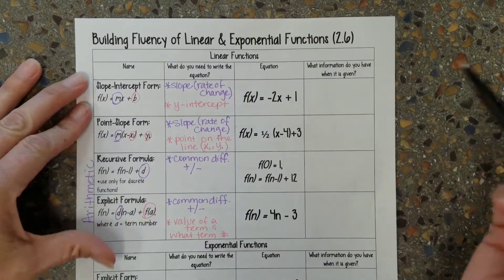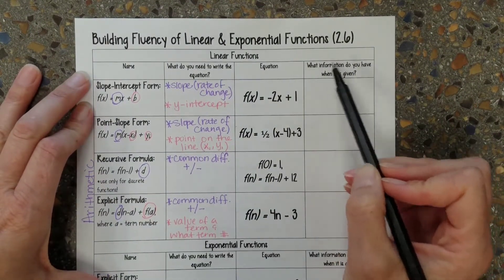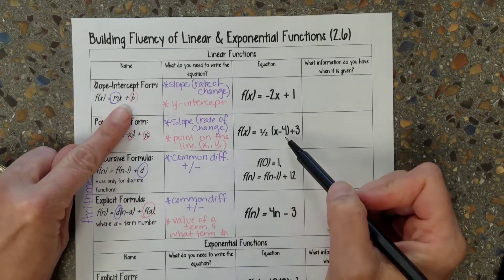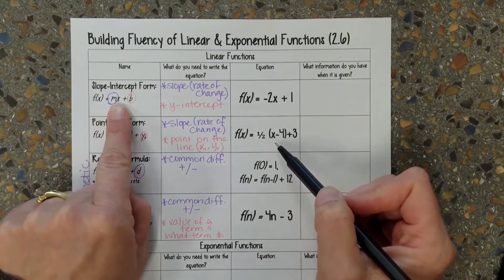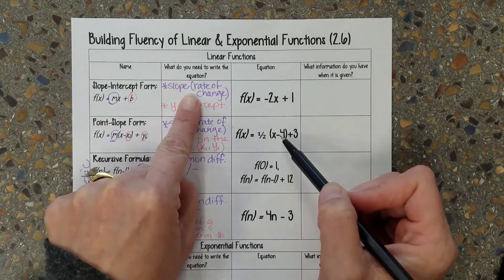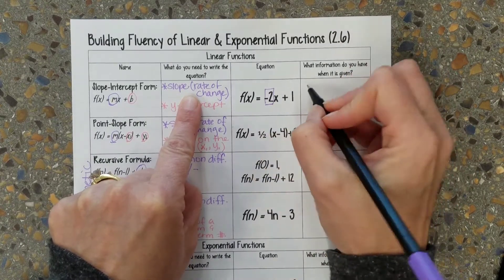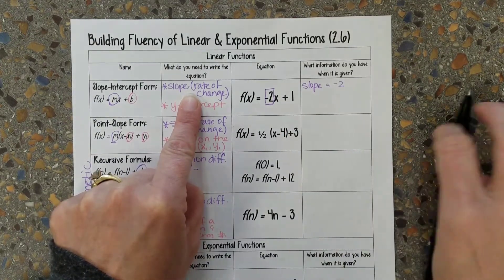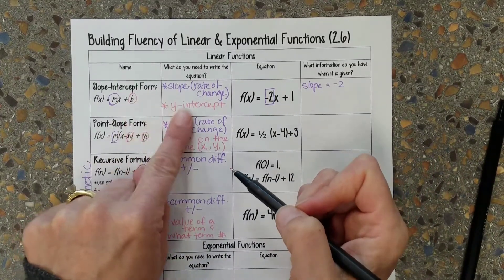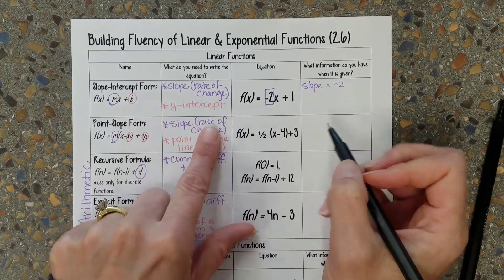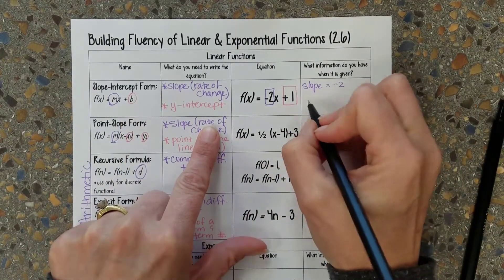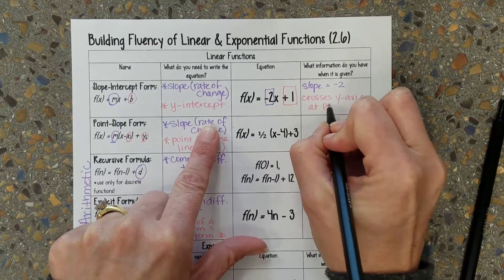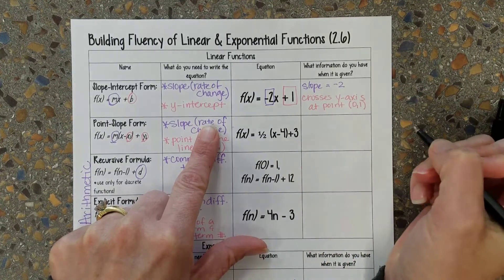So now let's look at these examples. This is the slope intercept form right here. Here's an example: f of x equals negative 2x plus 1. If I refer back to what my formula looks like, I know that the number in front of the x is my slope. So my slope is equal to negative 2. And I also know that my y-intercept, which is represented by b, is this positive 1 — so it crosses the y-axis at point (0, 1).